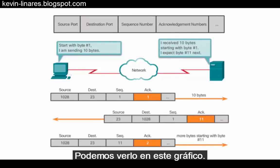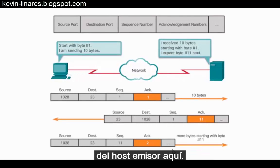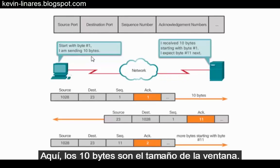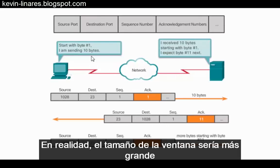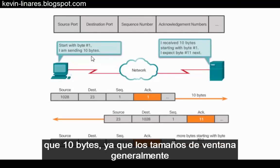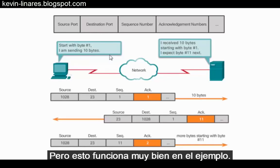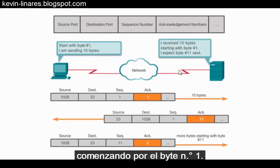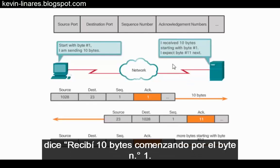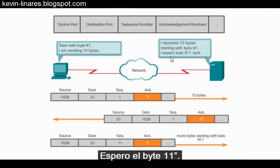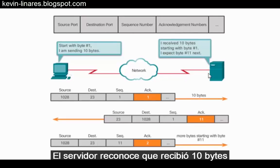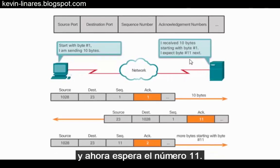We can see this depicted in this graphic. The message from the sending host reads: start with byte number one, I am sending 10 bytes. In this scenario, the 10 bytes is the window size. In reality, the window size would be a lot larger than 10 bytes, since today window sizes are typically 16 megabytes or larger, but this works nicely for this example. So the host is sending 10 bytes starting with byte number one. The receiving host, the server, says: I received 10 bytes starting with byte number one — I expect byte 11 next. This is the acknowledgement.